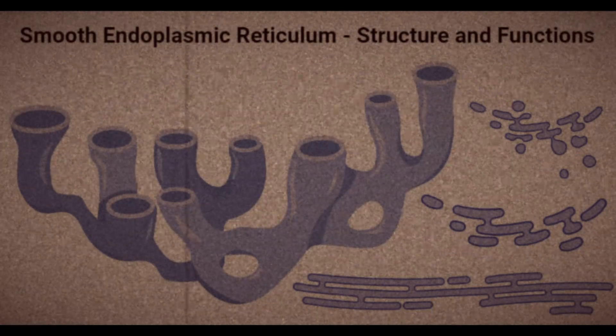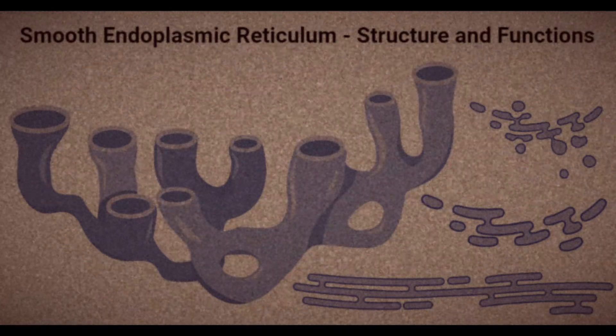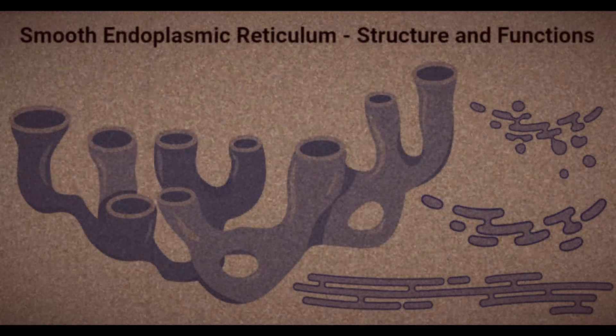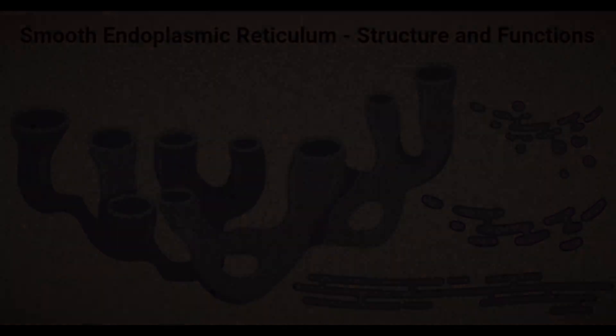Endoplasmic reticulum is a network of membranes inside a cell through which proteins and other molecules move. Smooth endoplasmic reticulum lacks ribosomes and helps synthesize and concentrate various substances needed by the cell. The cytoplasm contains a smooth ER.